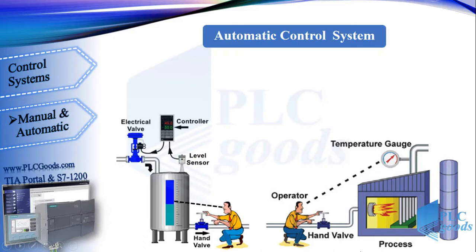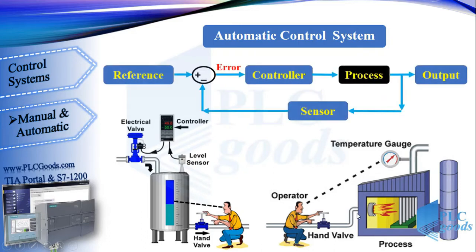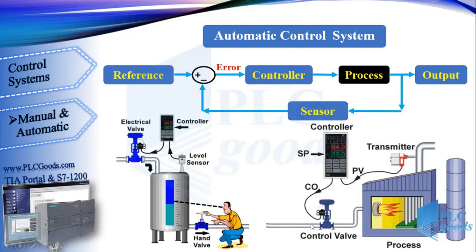This is the complete diagram where sensors and controllers are used instead of the operator. Here the transmitter measures the boiler pressure, the level sensor measures the liquid level inside the tank, and we are using an S7-1200 PLC as the system's controller.